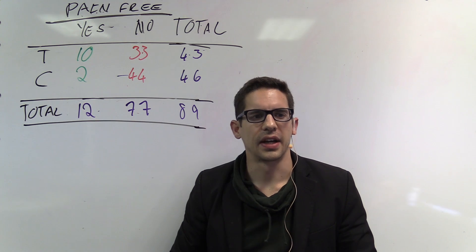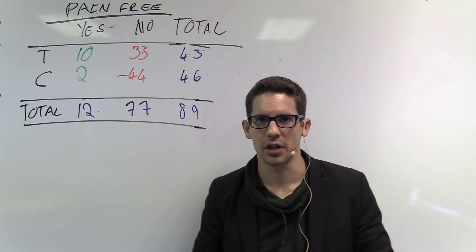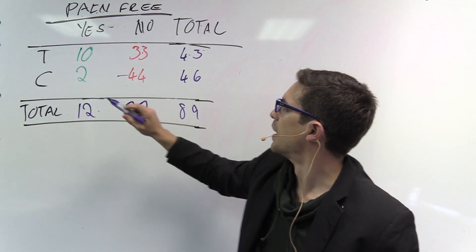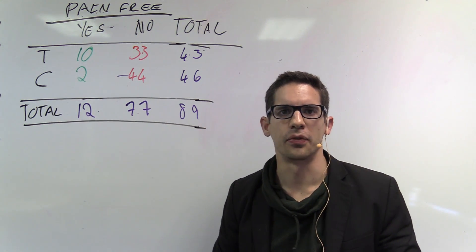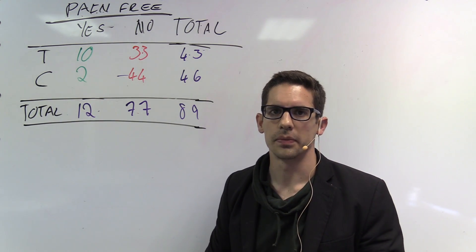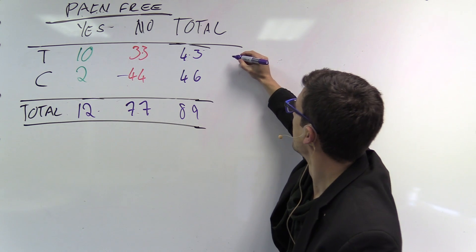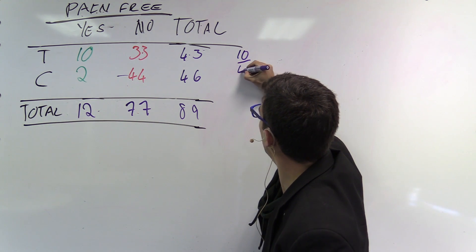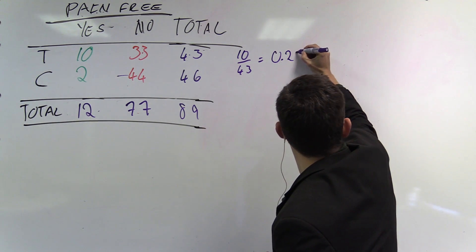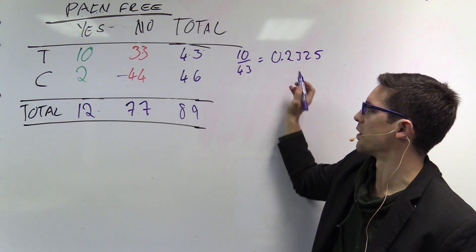The first question asks what percent of patients in the treatment group were pain-free 24 hours after receiving acupuncture. Looking at the treatment group row, 10 patients were pain-free out of a total of 43. So the proportion is 10 divided by 43, which equals 0.2325 — approximately 23%.